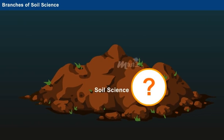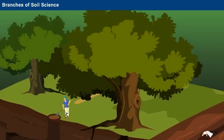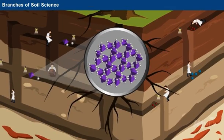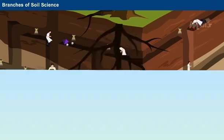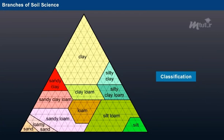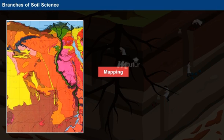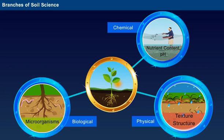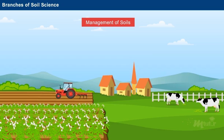So, what is soil science? Soil science is the science dealing with soils as a natural resource on the surface of the earth including soil formation, classification and mapping, and physical, chemical, biological and fertility properties of soils. It also deals with those properties in relation to the use and management of soils.